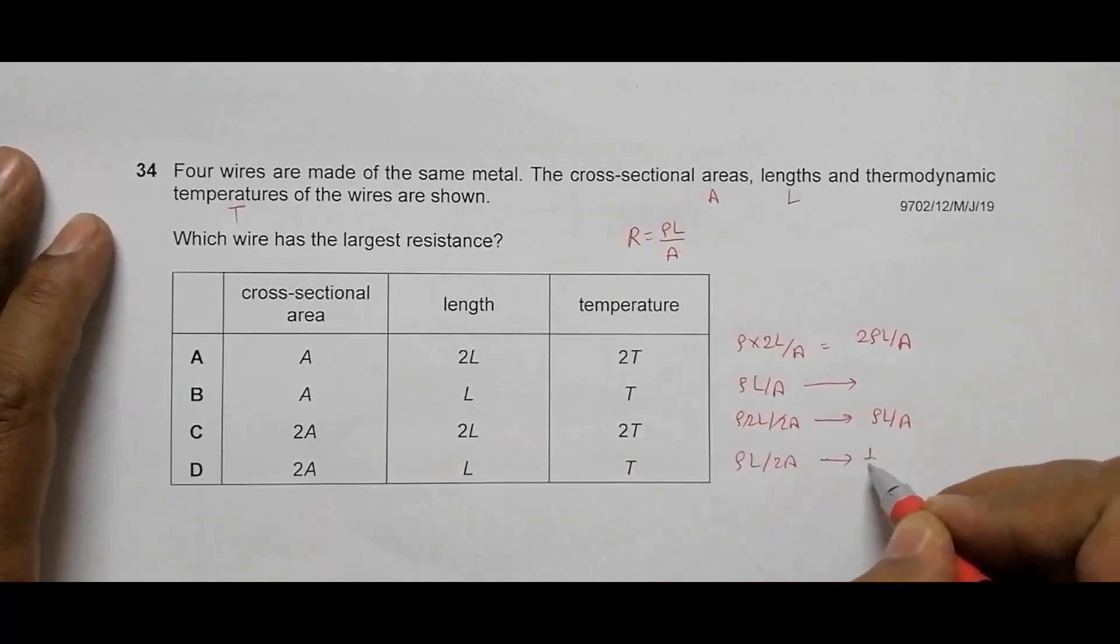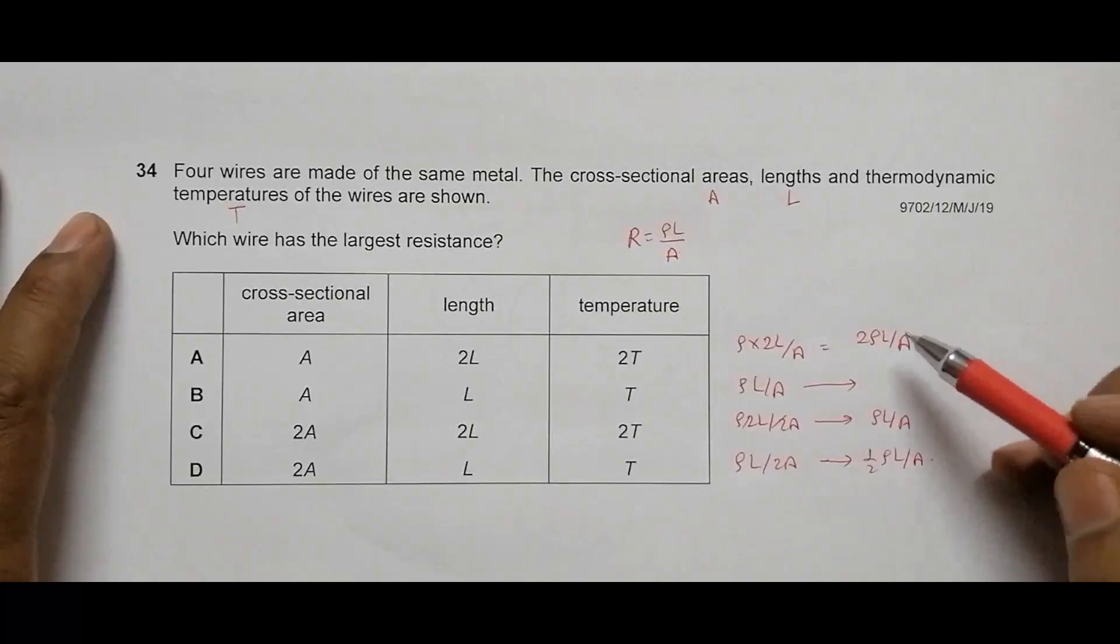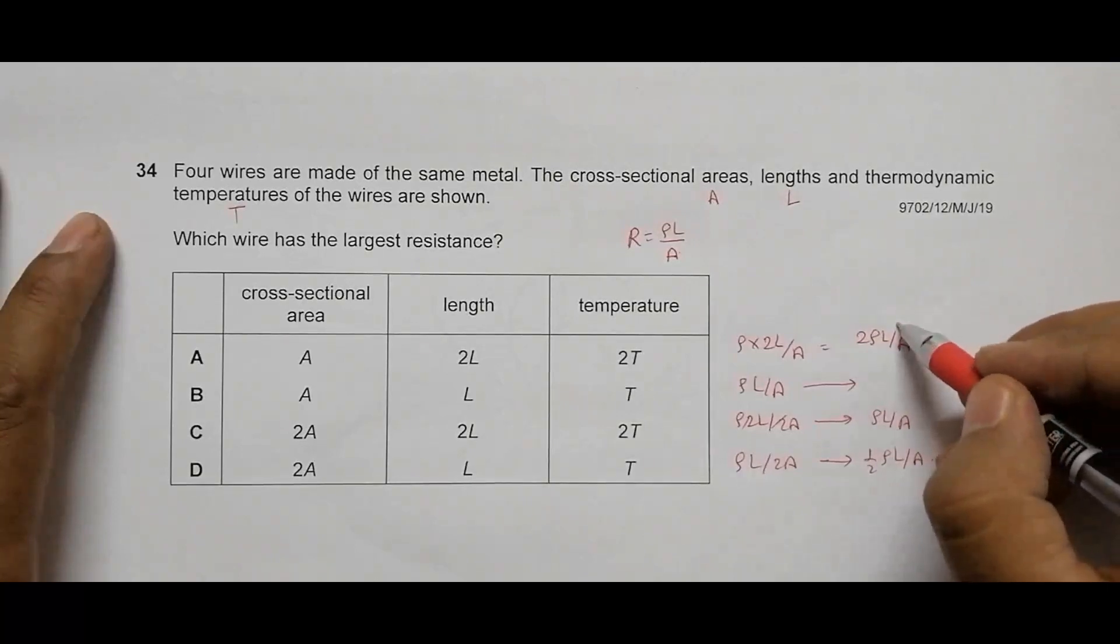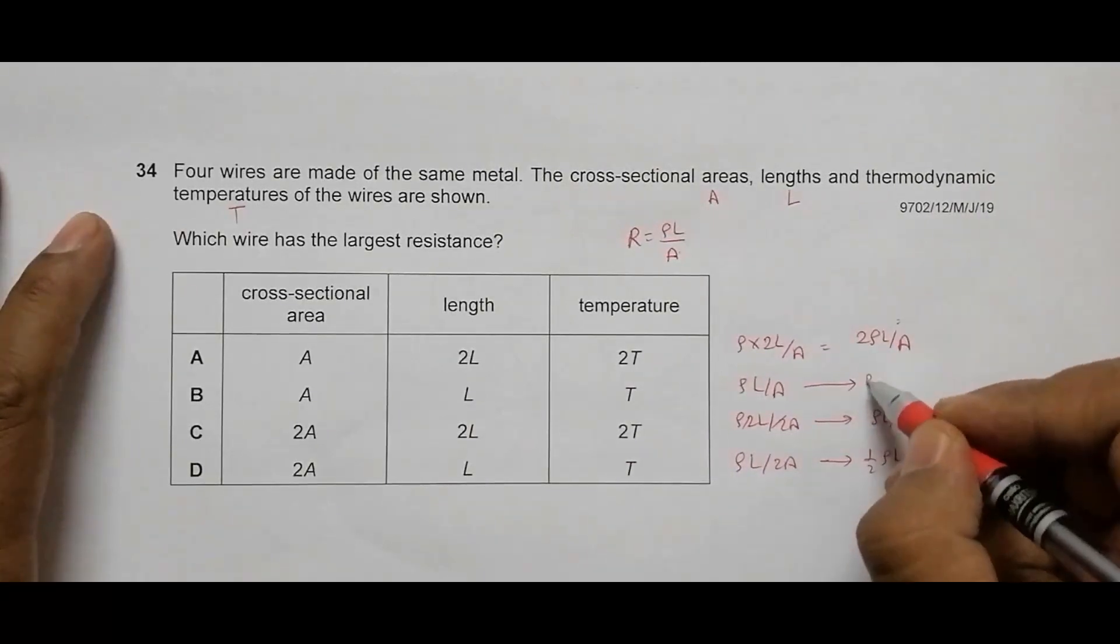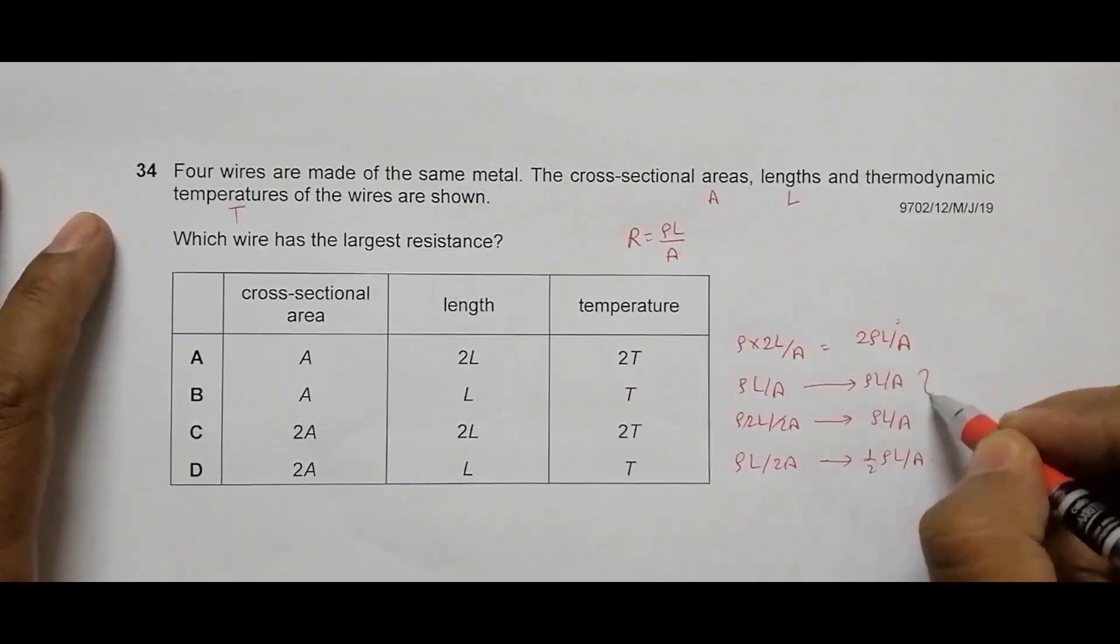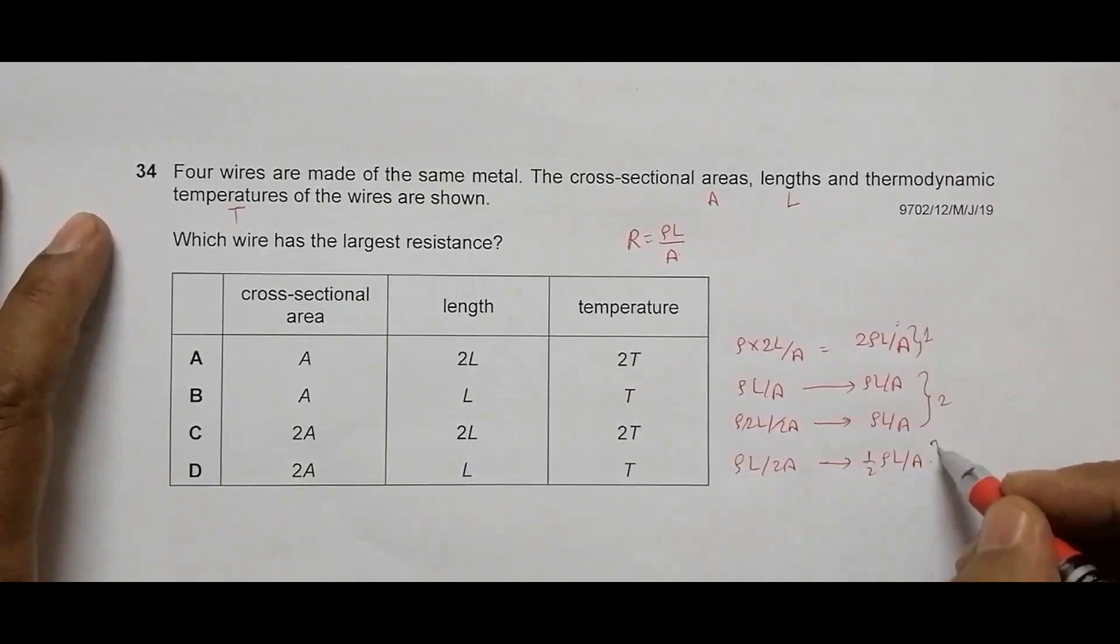Going through all the options, we have that the resistance here will be the highest. Then we have both B and C equal as number two. And D is number three, the last.